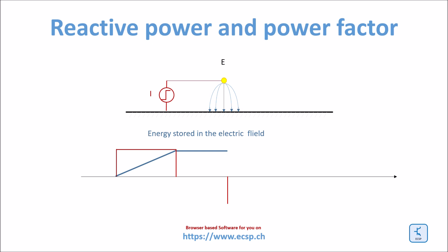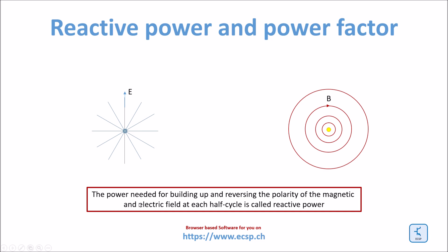And in order to decrease the electric field, I would have to reverse the current flow. And you see what happens. The same thing as with the magnetic field. So the power needed for building up and reversing the polarity of the magnetic and electric field at each half cycle is called reactive power. No voltage will be built up anywhere nor will current flow anywhere without this reactive power.